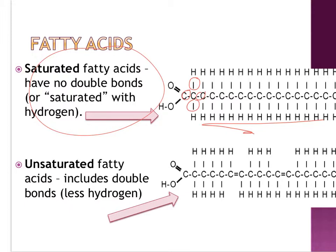Hydrogens only require one bond. If it is not saturated with hydrogens, it will still have four bonds — this is a double bond. When it is not saturated with hydrogens, it is unsaturated. On your notes, please circle those double bonds on the unsaturated fatty acids, like you see here that I have done.